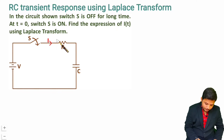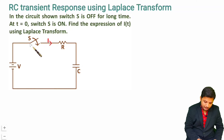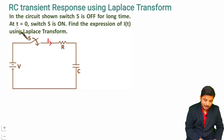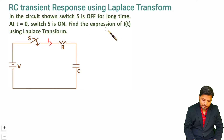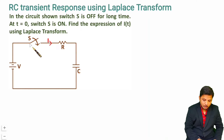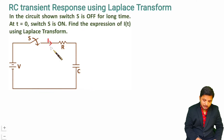So if you observe here, we have an RC circuit connected in series with one switch. In the circuit shown, switch S is off for a longer period, so the supply is not connected in this circuit and nothing will happen.